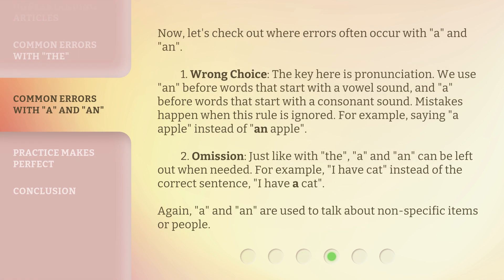Now let's check out where errors often occur with 'a' and 'an'. First, wrong choice — the key here is pronunciation. We use 'an' before words that start with a vowel sound, and 'a' before words that start with a consonant sound. Mistakes happen when this rule is ignored — for example, saying 'a apple' instead of 'an apple'. Second, omission — just like with 'the', 'a' and 'an' can be left out when needed. For example, 'I have cat' instead of the correct 'I have a cat'. Remember, 'a' and 'an' are used to talk about non-specific items or people.